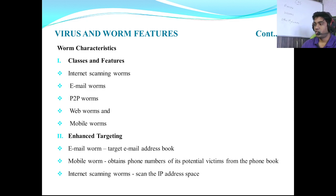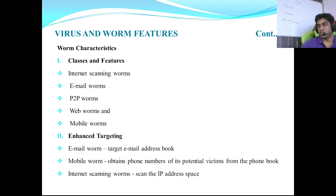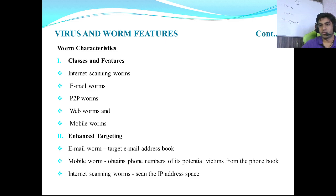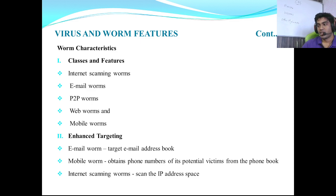A question they can ask is: explain the classes of worms. There are five classes of worms. They are: internet scanning worms, email worms, peer-to-peer (P2P) worms, web worms, and mobile worms.